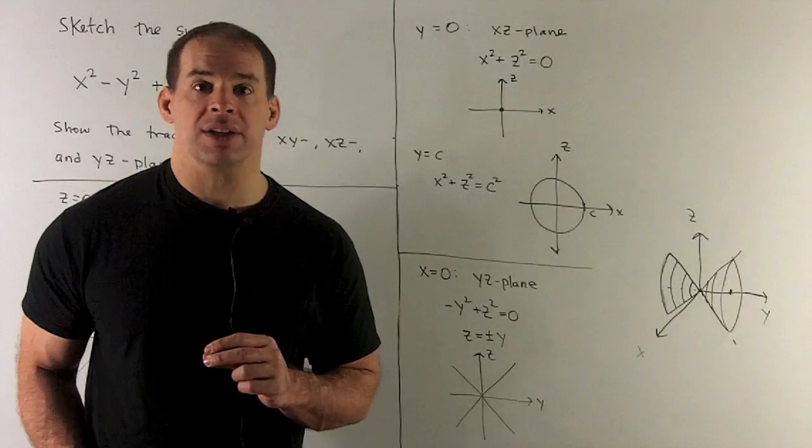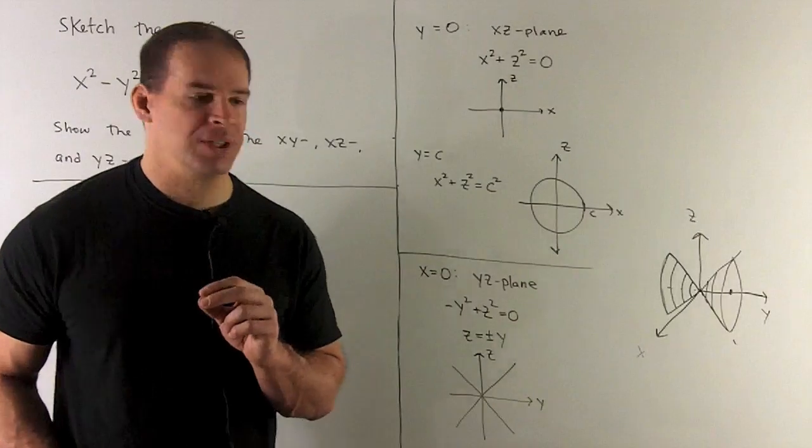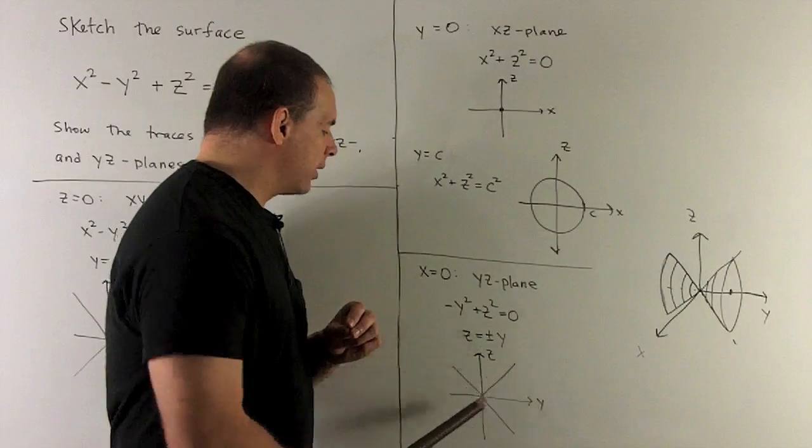Finally, I look at the yz plane. Let x = 0. We wind up with z = ±y, so again we have lines at 45-degree angles.